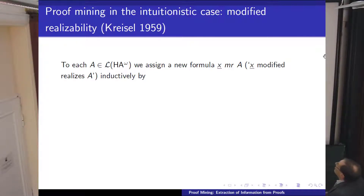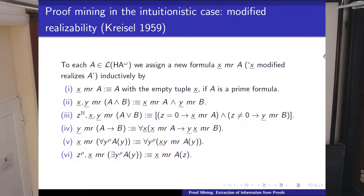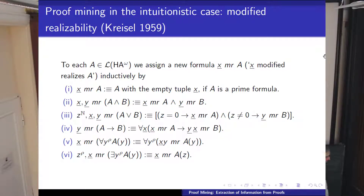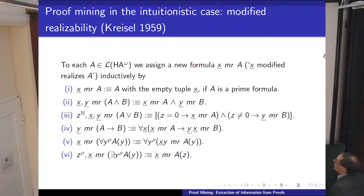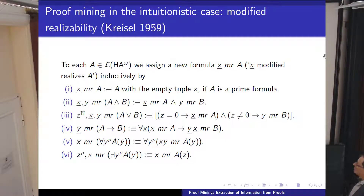One particular way to make precise the Brouwer-Heyting-Kolmogorov interpretation—mentioned in Peter Dybjer's talk—is to use Kreisel's modified realizability. It's called modified because it modifies Kleene's original realizability, where Kleene's original realizability was type-free and partial. Here we are total and typed, and this goes together: if you want to be total, you have to be typed.